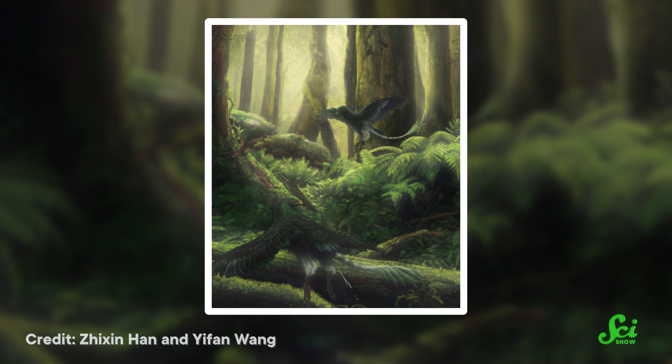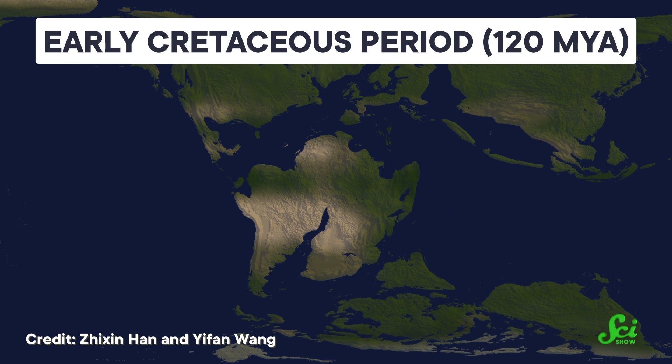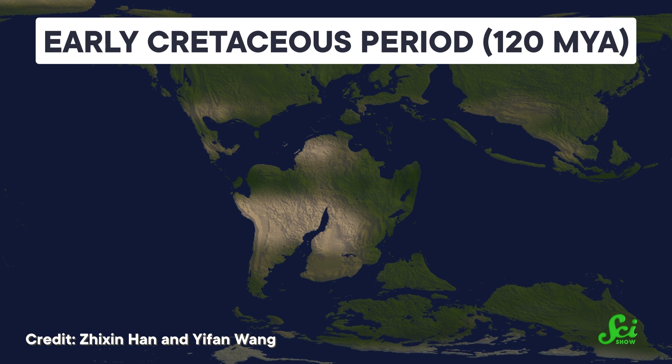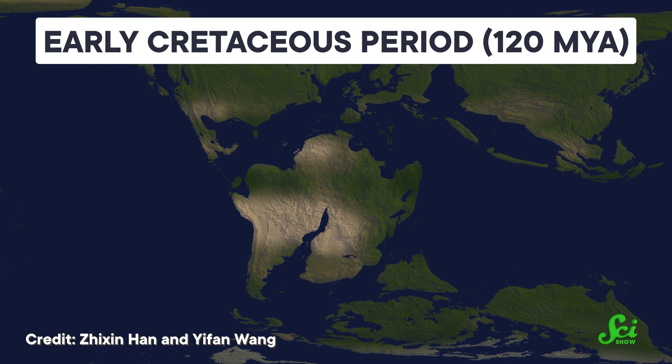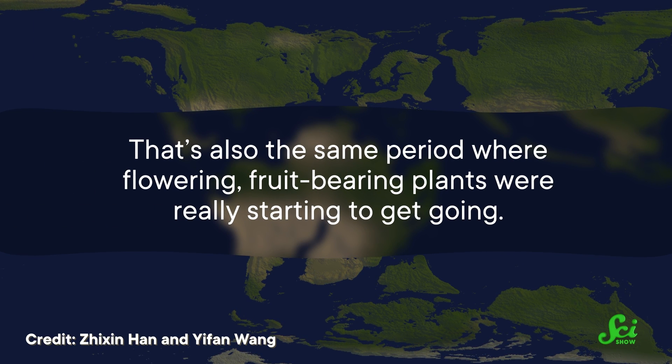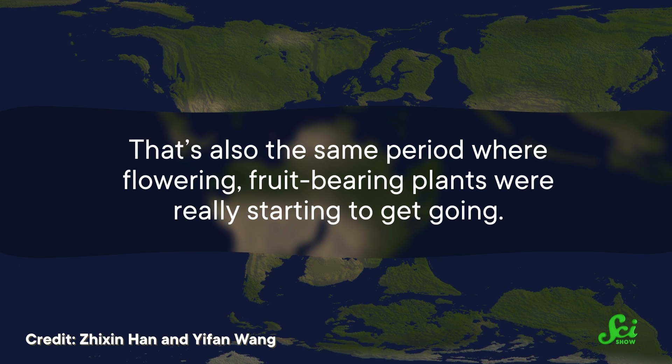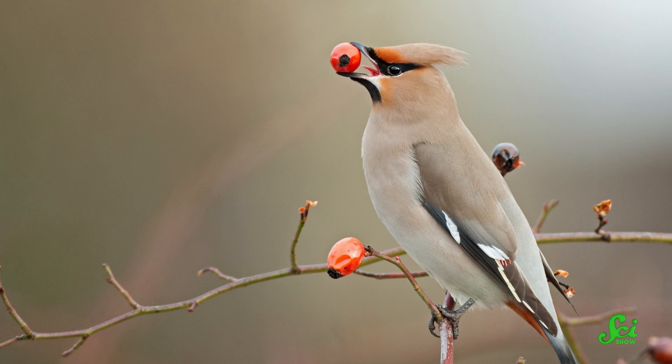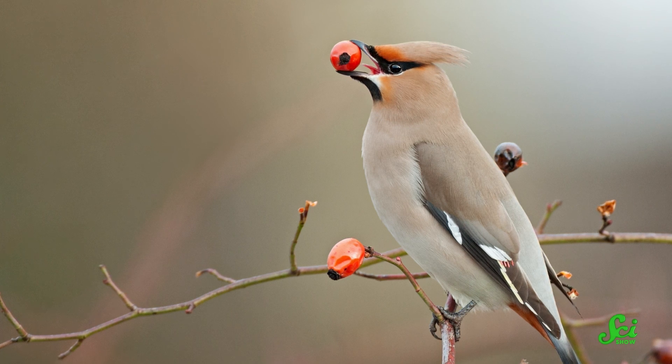In other ancient evolution news, paleontologists have been on the hunt for the very first fruit-eaters. They want to understand how fruit-bearing plants and fruit-eating animals could have helped each other evolve. According to a paper published last week in the journal eLife, they've found a new suspect — one of the oldest known birds in the fossil record, which lived about 120 million years ago, during the first half of the Cretaceous period, when flowering fruit-bearing plants were really starting to get going. Bird eats fruit, bird poops seeds, bird gets fed, and baby plants get a new place to grow.